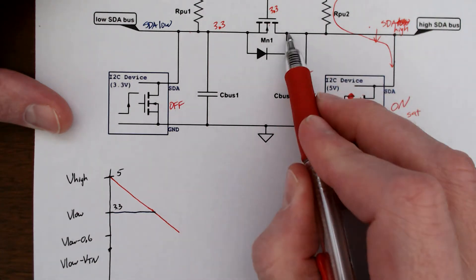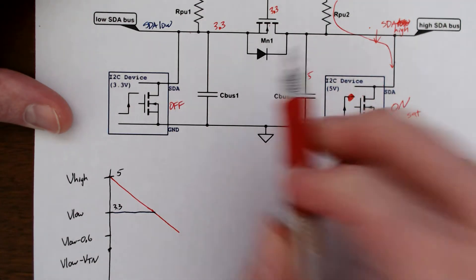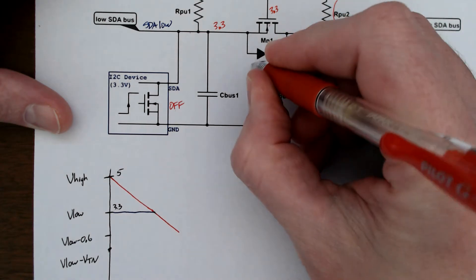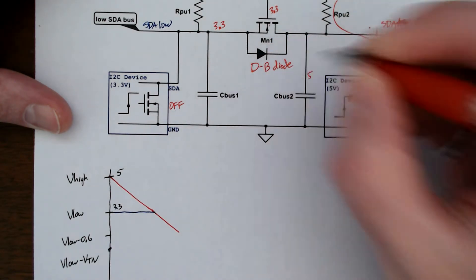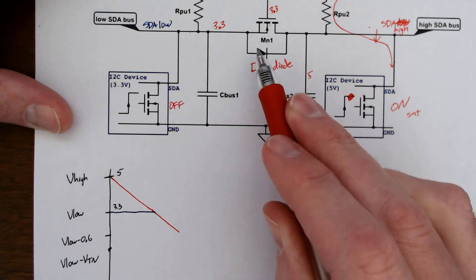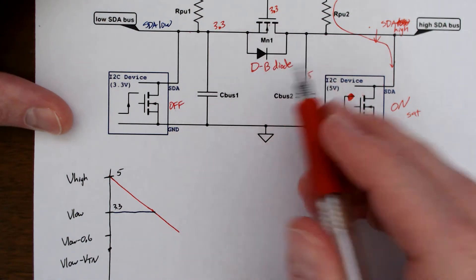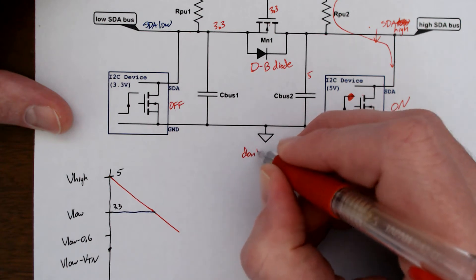But remember, we do have this body diode. This is the drain-to-body diode in this MOSFET. This is drawn outside. That's just so we don't forget about it.